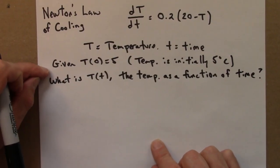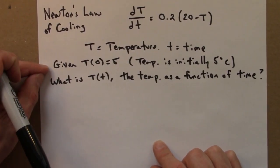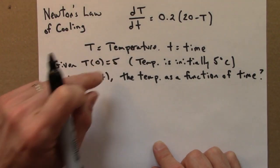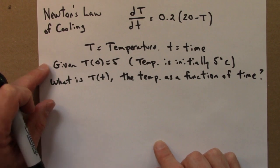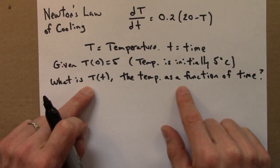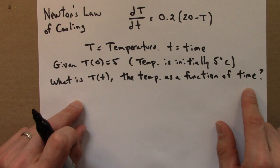So, given that T is 5, that means the temperature at time t equals 0 is 5, that's the initial temperature, we would like to know what is capital T of t. How does the temperature vary? How does it change as a function of time?